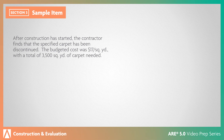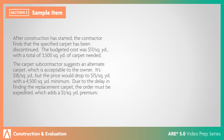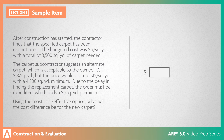After construction has started, the contractor finds that the specified carpet has been discontinued. The budgeted cost was $17 per square yard, with a total of 3,500 square yards of carpet needed. The carpet subcontractor suggests an alternate carpet, which is acceptable to the owner. It's $18 per square yard, but the price would drop to $15 per square yard with a 4,500 square yard minimum. Due to the delay in finding the replacement carpet, the order must be expedited, which adds a $1 per square yard premium. Using the most cost-effective option, what will the cost difference be for the new carpet?